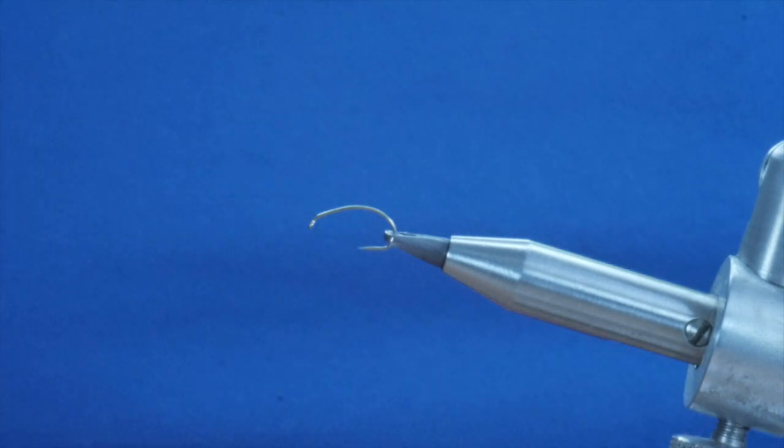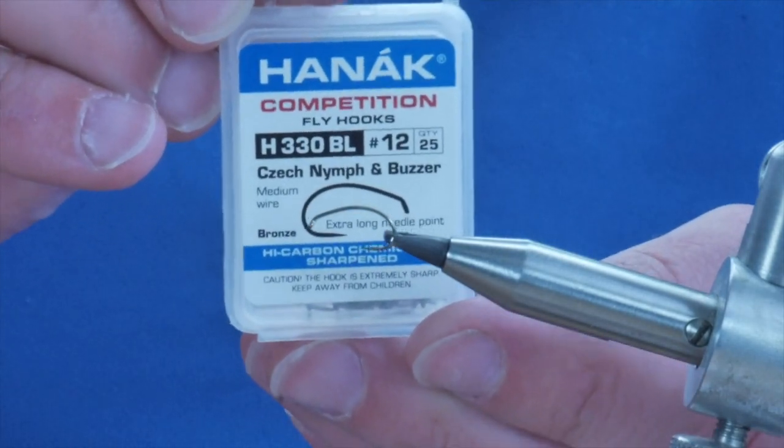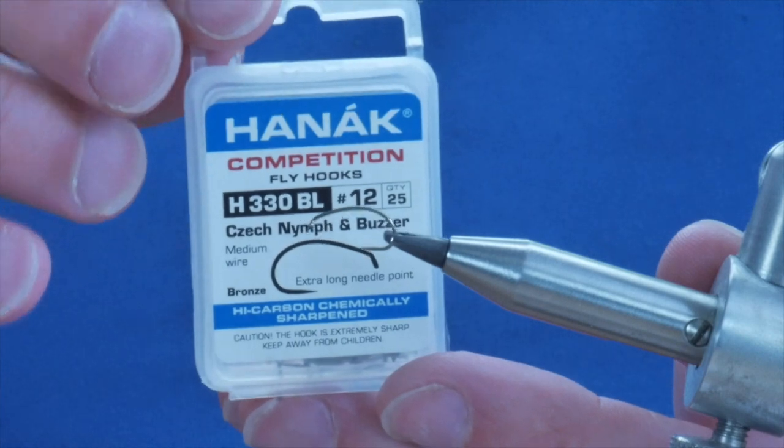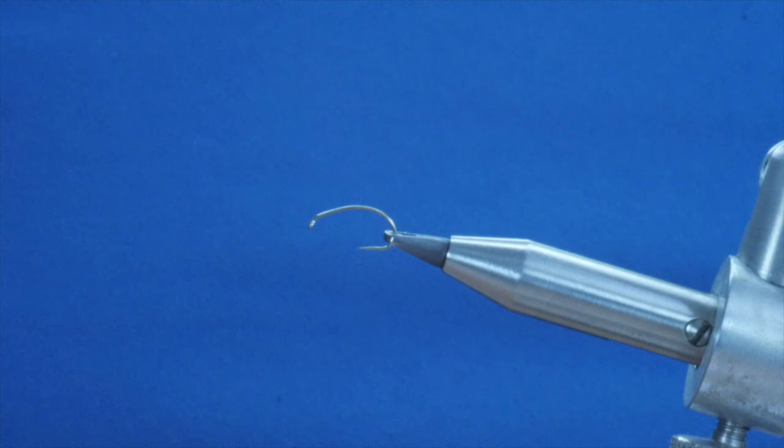First thing I've got in the vise is a Hanak 330 barbless hook. It's a medium wire hook. Now I know it says 12 here, but actually the sizing is probably more akin to a 14 than a 12.